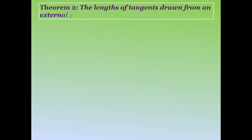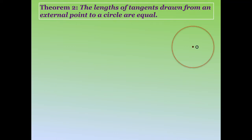The next theorem says that the lengths of tangents drawn from an external point to a circle are equal. You might wonder how we measure the length of a tangent line. The length of the tangent is the distance between the external point and the point of contact on the circle. Here we have point A and point B as points of contact, so the lengths PA and PB are called the lengths of the tangents.